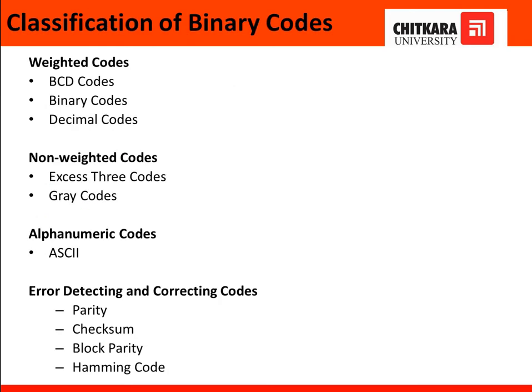So, this is the classification of the binary codes that it is divided into the three types: weighted, non-weighted, and alphanumeric codes. Further, weighted is divided into the three BCD codes, that is binary coded decimal code. Next one is the binary codes and the decimal codes. Non-weighted code deals with the accessory codes, gray codes, and alphanumeric codes deals with the ASCII code. So, when we are dealing with these codes, that means we are just transmitting the data in the form of codes only.